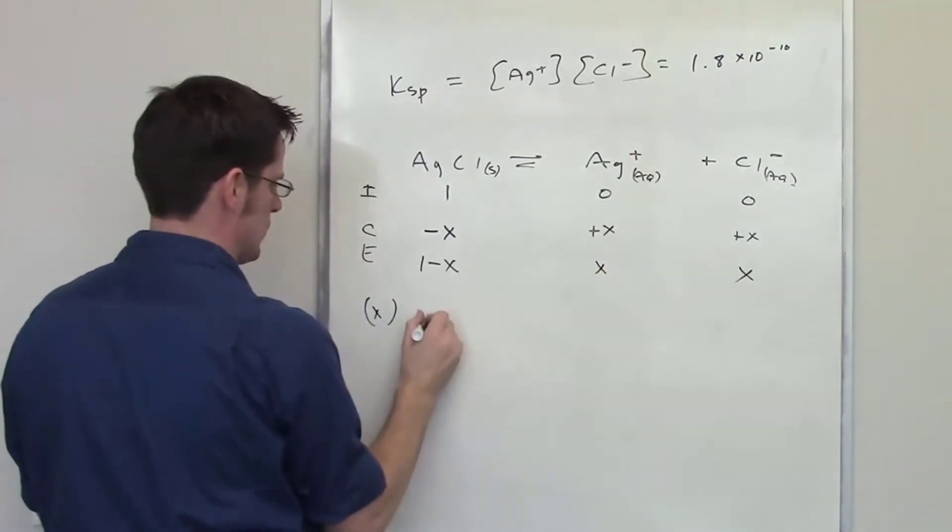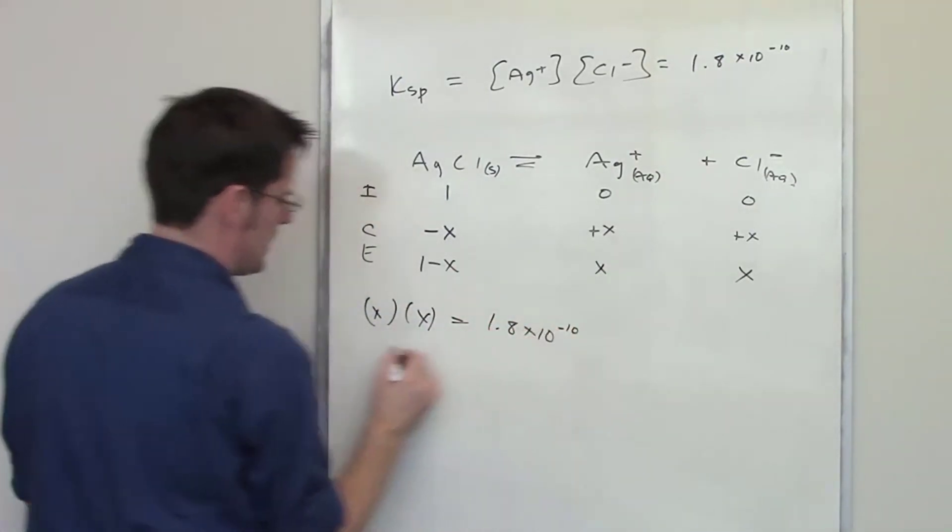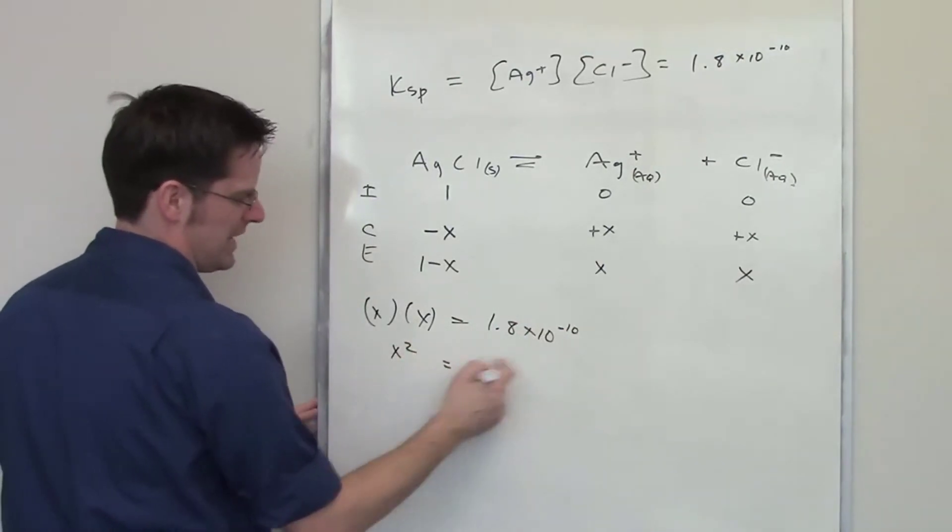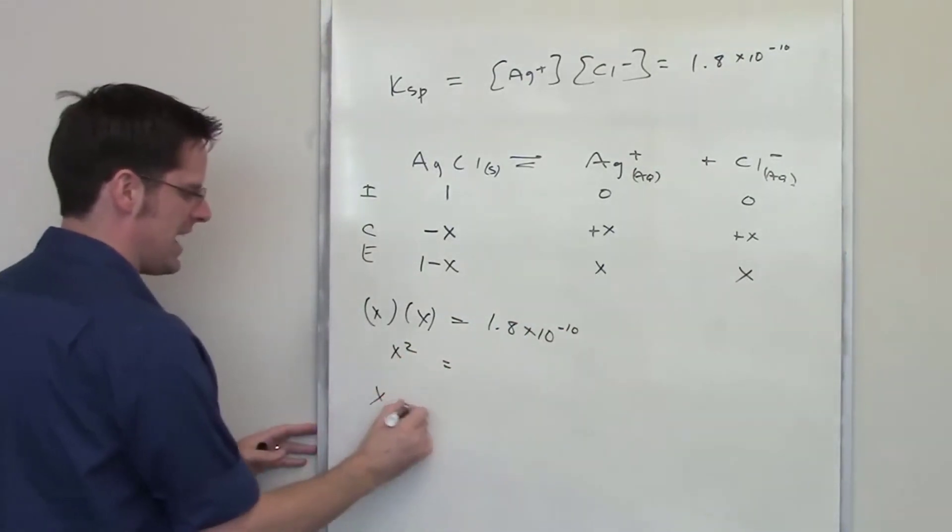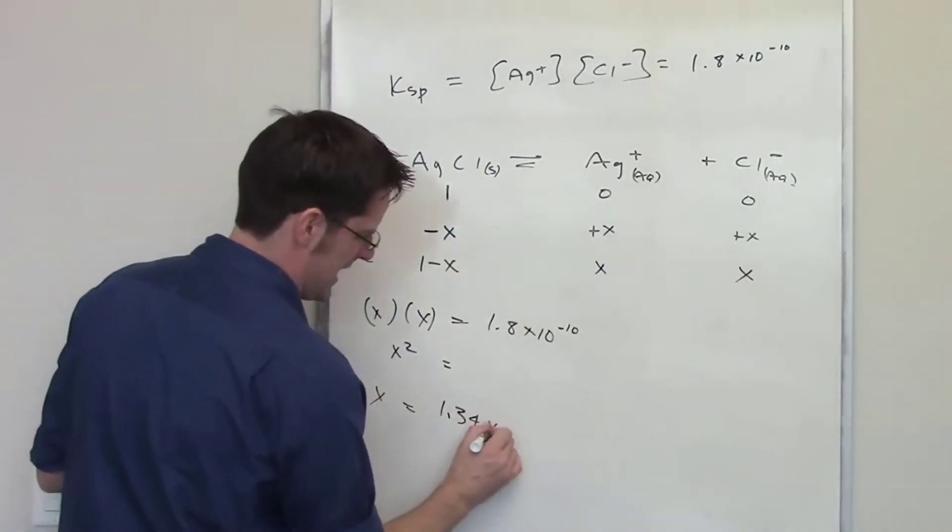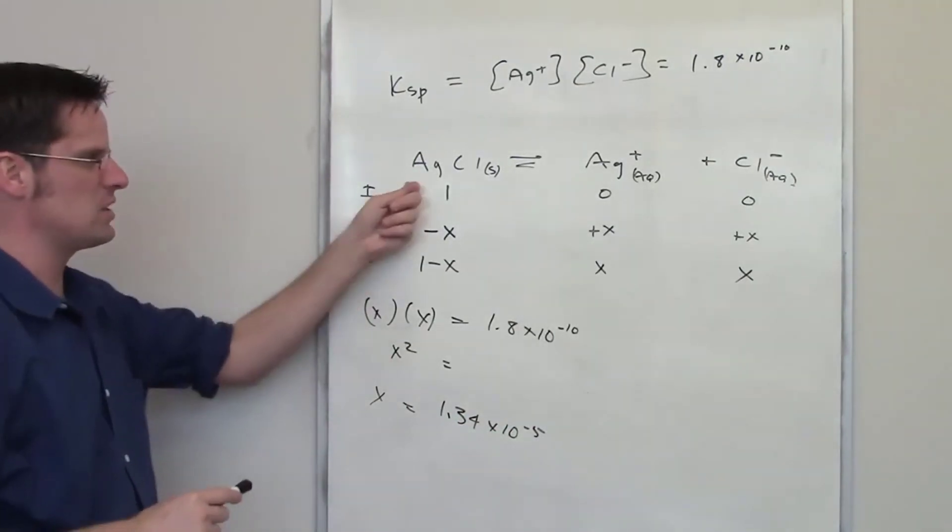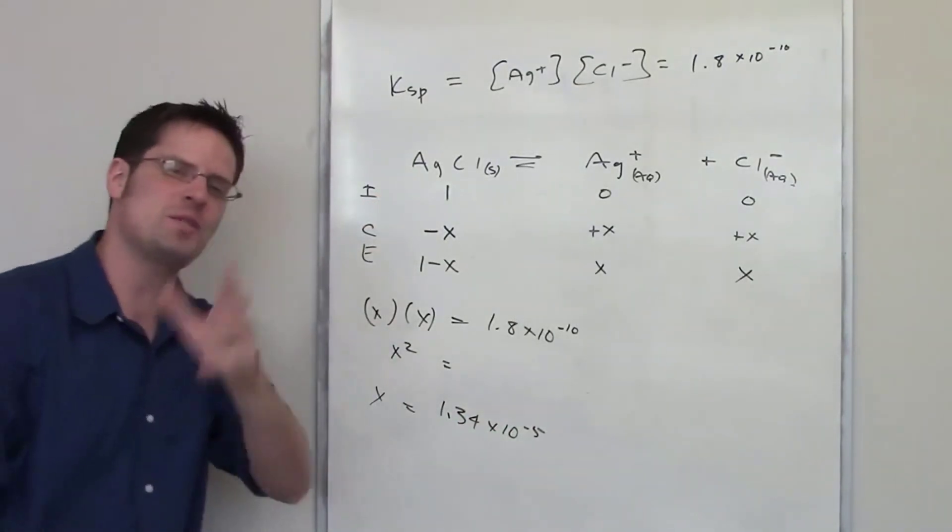x for my chloride concentration, setting that equal to 1.8 times 10 to the negative tenth. I've got x squared being equal to this number. I solve for x and that final number ends up being 1.34 times 10 to the negative fifth. That is the molar solubility of silver chloride at 25 degrees Celsius.